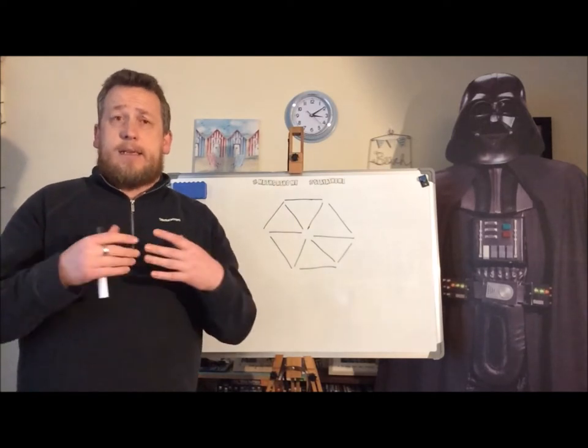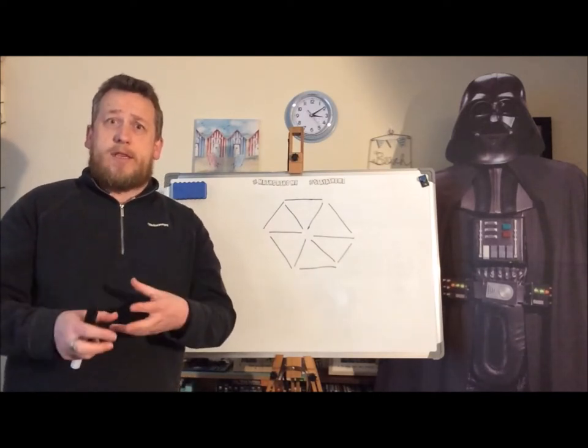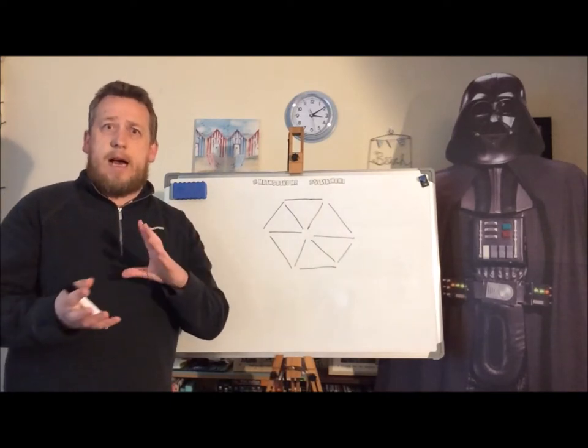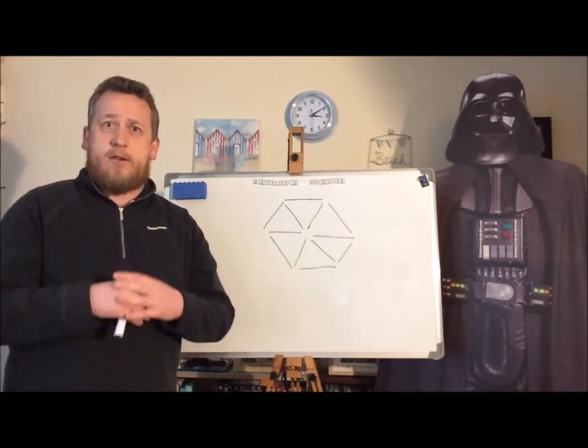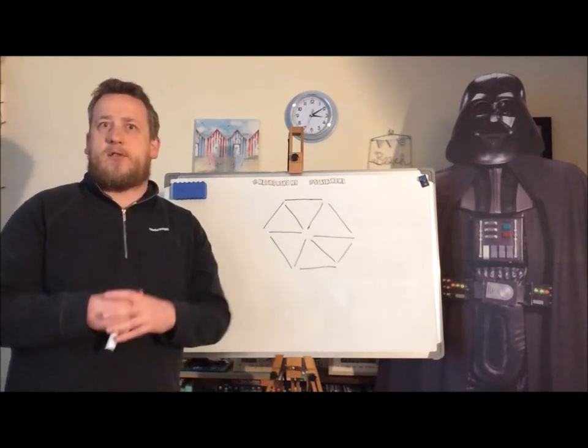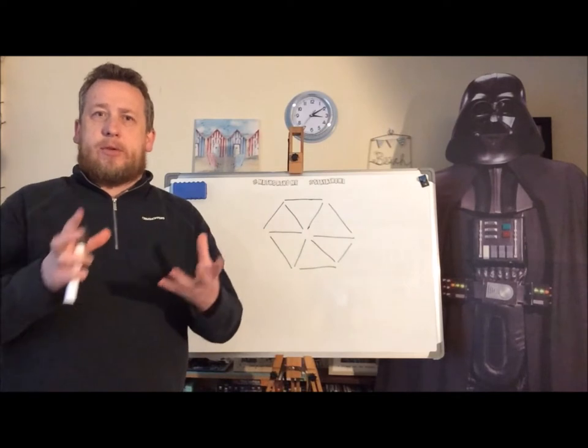The one that I'm going to set for you today involves the diagram on the board. Now, the diagram is either a hexagon or six triangles depending on how you're looking at it, but it's a hexagon made of six triangles really.